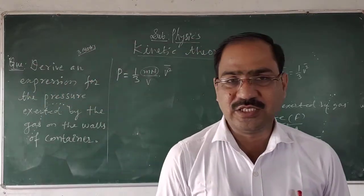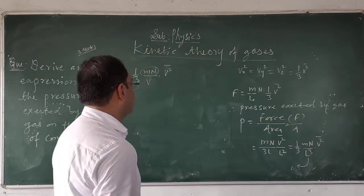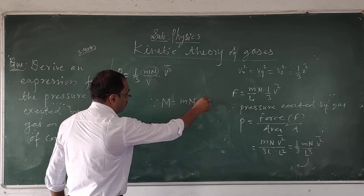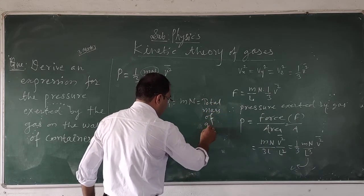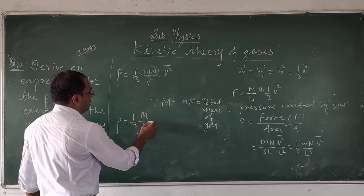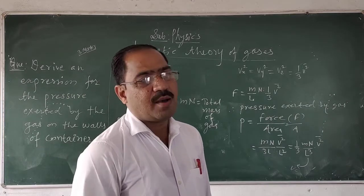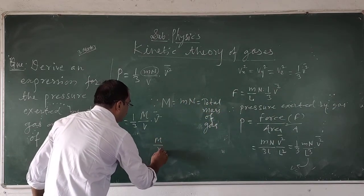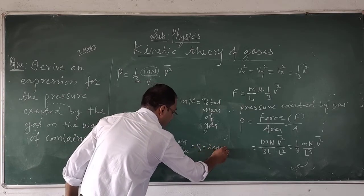Here M is the mass of each particle of the gas, and N is the number of particles which are enclosed inside the box. Therefore, the total mass of the gas will be M into N, that is capital M equals m into N. Because capital M is the total mass of the gas. Therefore, capital M equals one-third times capital M over V into V squared mean. The ratio of mass by volume is called density, so M upon V becomes rho, the density.